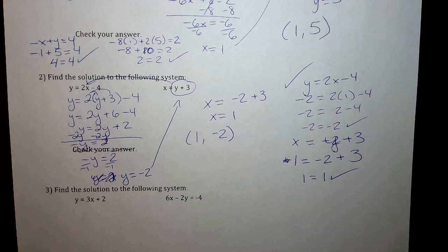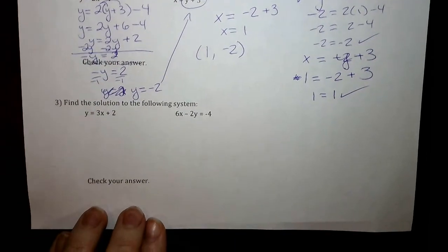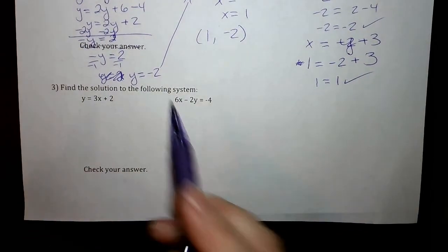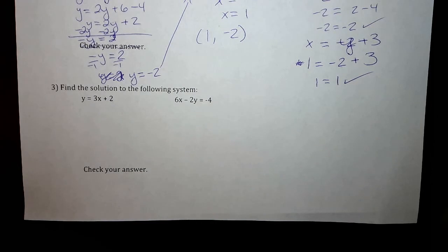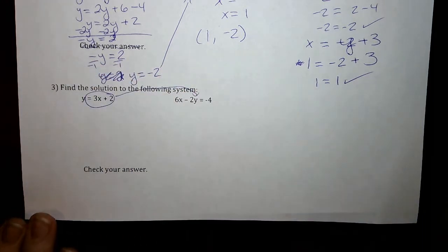All right. So number 1 and 2, you have a one solution problem. You do your algebra out and you get an ordered pair. Now remember with systems, we have two special cases as well. So if I look at number 3, again, I already have an equation that's set up equal to one of our variables. So I don't need to transform anything. I can just take this and plug it in for y.